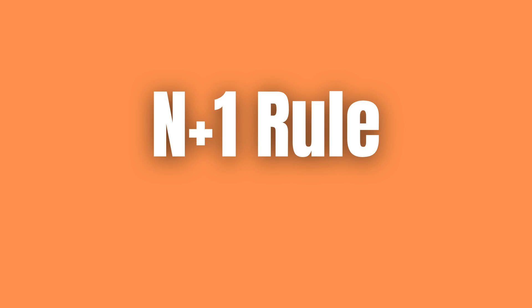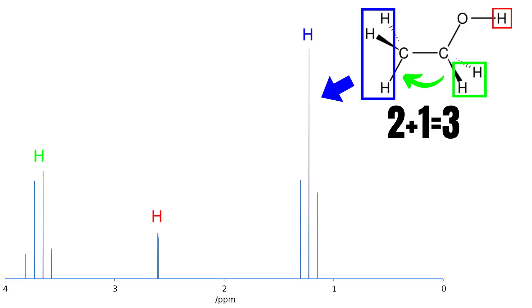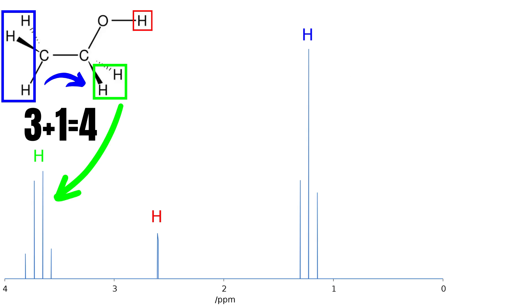The split follows the N plus 1 rule. Meaning that if the neighbor has two protons, it splits into three peaks. And if the neighbor has three protons, it splits into four peaks.